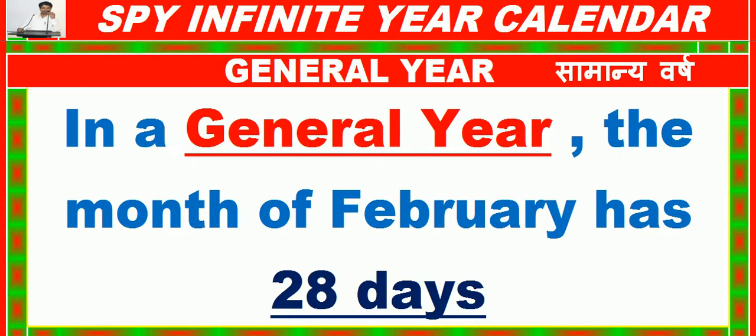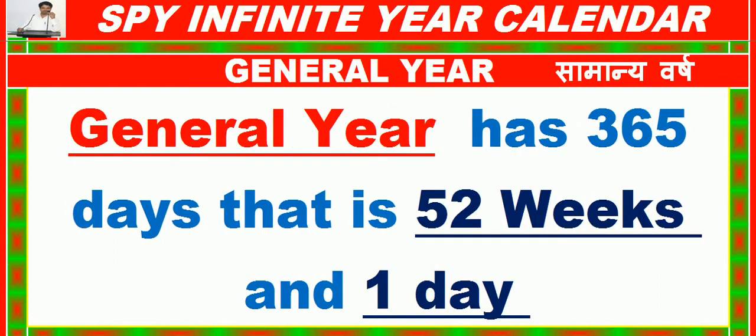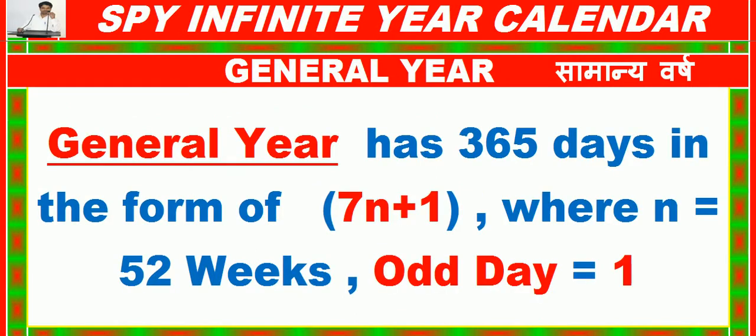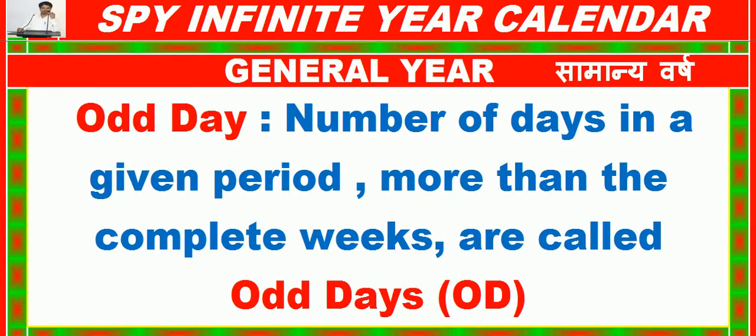In a general year, the month of February has 28 days. A general year has 365 days, that is 52 weeks and 1 day, expressed as 7n + 1 where n = 52 weeks, with 1 odd day. Odd days are the number of days in a given period more than the complete weeks.